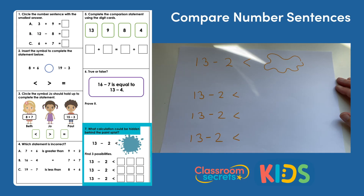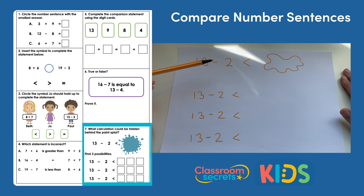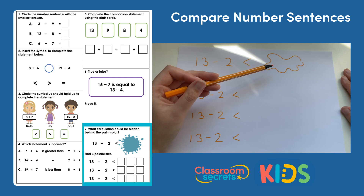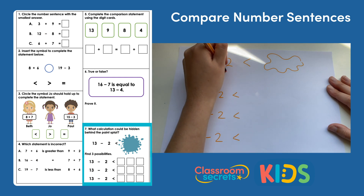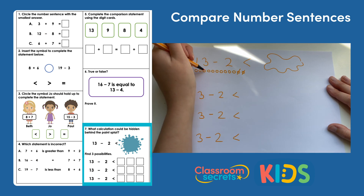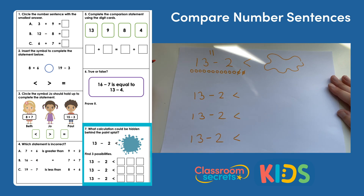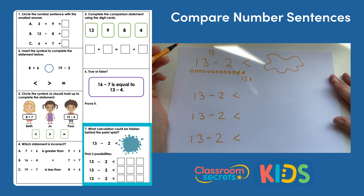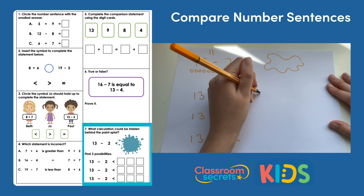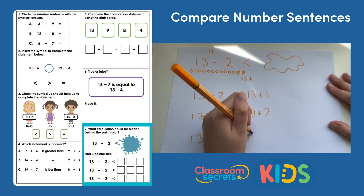So for the last question, what calculation could be hidden behind the splat? Find three possibilities. We need to find calculations that give an answer greater than thirteen subtract two, as thirteen subtract two is smaller than the missing calculation. So first let's find out what the answer to thirteen subtract two is. Thirteen dots, taking away two. And that leaves me with one, two, three, four, five, six, seven, eight, nine, ten, eleven. So eleven is smaller than something. So what calculations could we do? We could do adds or takeaways as long as they give an answer that's more than eleven. I'm going to stick with adds. And if I always add to thirteen, I'm always going to have a number that's bigger than the answer to this calculation. So I'm going to do thirteen add one, thirteen add two, and thirteen add three.